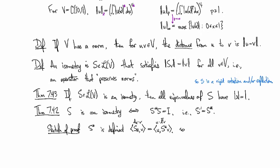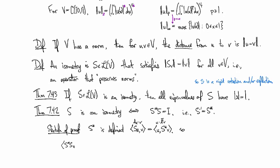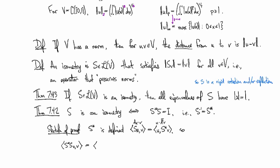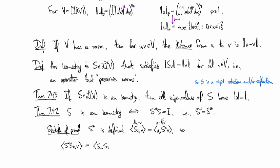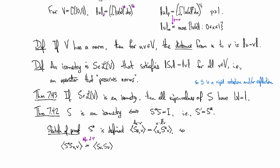If we look at S star S u against v, then this is going to be, I can move that S star over to the other side because that's exactly what the definition of the adjoint is and it comes across as just S. So this is definition of S star.